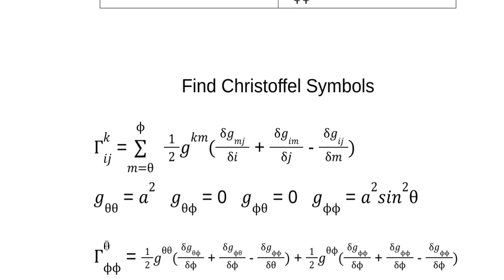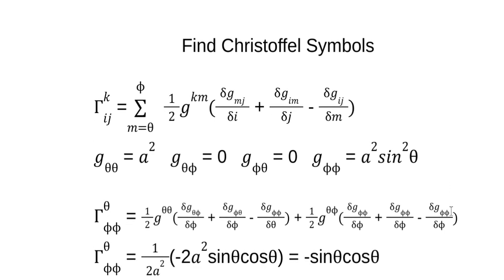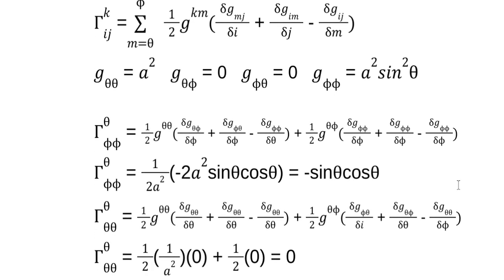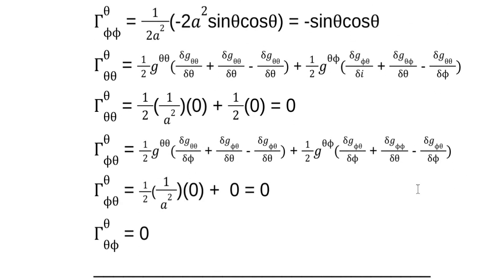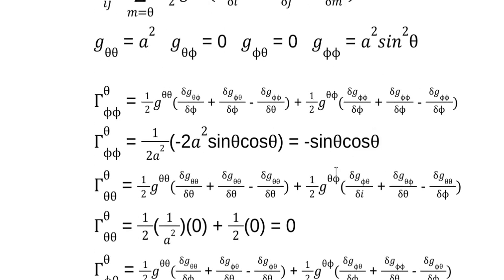Here's our first example: k is theta, and ij is phi-phi. We fill in all of those little indices, and the only one that's non-zero is g_(theta,theta) = a² sin²θ, multiplied by g^(theta,theta) = 1/a². We write that down: we have one-half, times 1/a², and the derivative of sin²θ with respect to theta — which is −2 sin θ cos θ. Since a² is a constant, these all cancel and we're left with −sin θ cos θ. The next ones are zero, so for the k index equal theta, we only get one non-zero Christoffel symbol component.